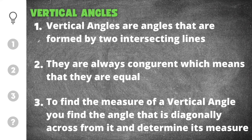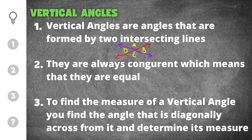We have three important things we need to remember when solving for vertical angles. The first tip is that vertical angles are angles that are formed by two intersecting lines — that's the definition. After two lines intersect, the vertical angles will be located diagonally across the point of intersection.